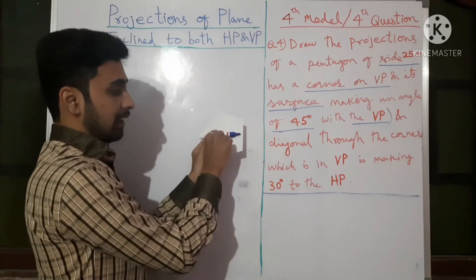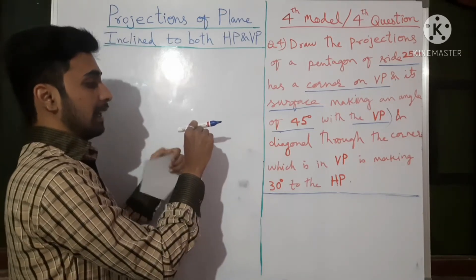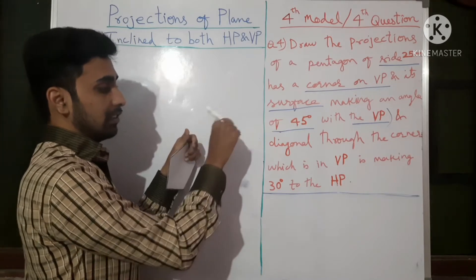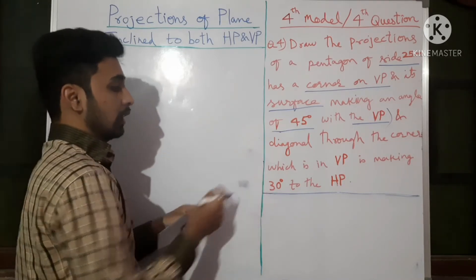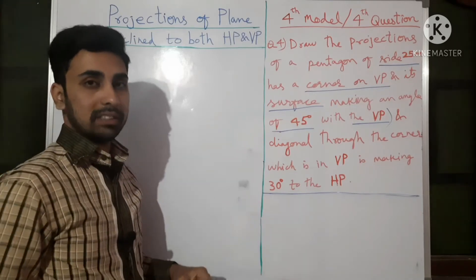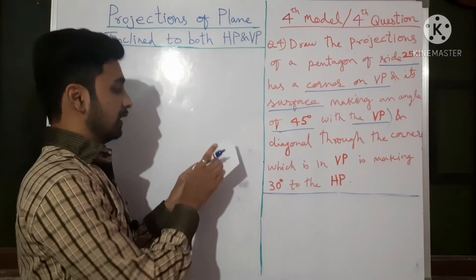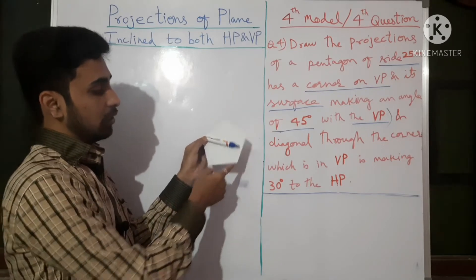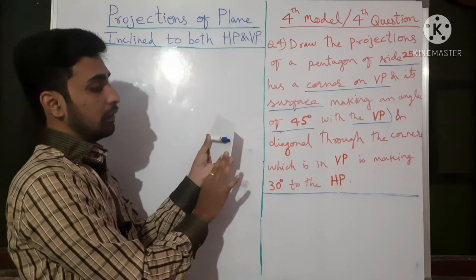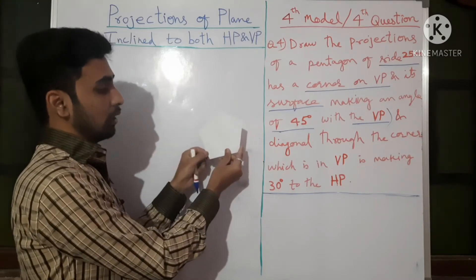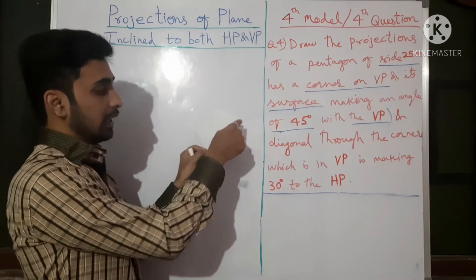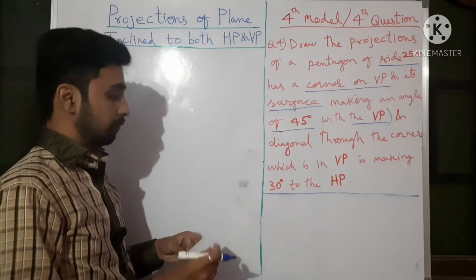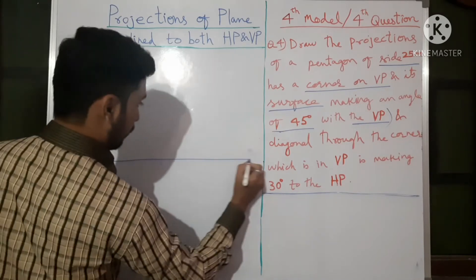For better clarification, this diagonal is the line inclined at 30 degrees to HP. As I said, in projection of planes we can tilt in either direction, but make sure the diagonal from this corner is at 30 degrees. For the first step, we assume both the diagonal angle and the surface angle as 0 degrees, so the true shape of the object is visible in the first view.